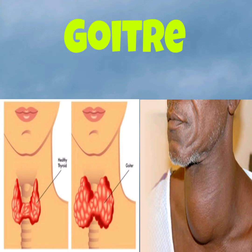What is goiter? It is the swelling of the neck — the swelling of a gland in the neck. One gland is present in the neck called the thyroid gland. It produces a hormone called thyroxine. For the production of thyroxine, iodine is very, very important.